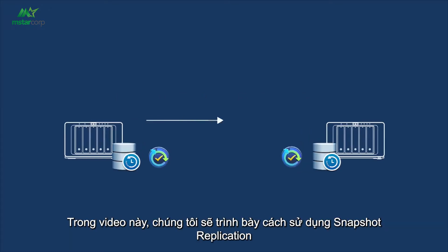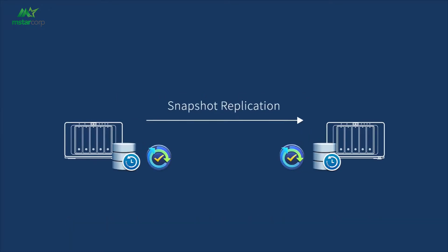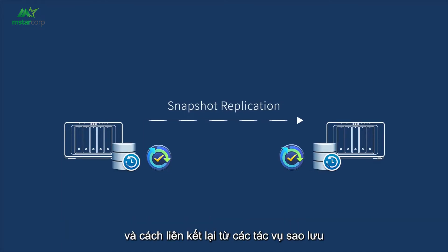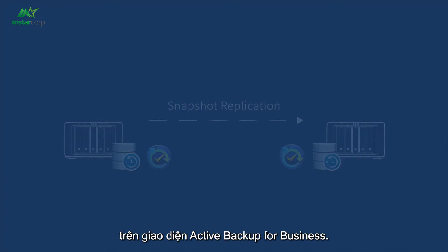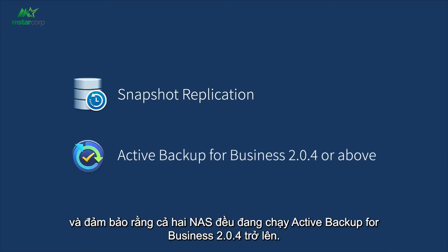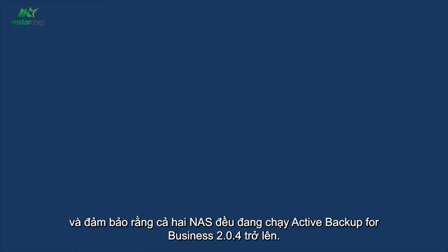In this video, we'll demonstrate how to use Snapshot Replication to replicate your backup data to a second Synology NAS and how to relink backup tasks on the Active Backup for Business interface. Before you start, install the Snapshot Replication package and make sure both NAS are running Active Backup for Business 2.0.4 or above.